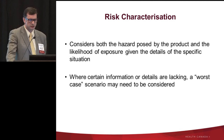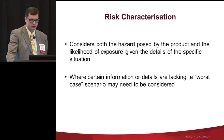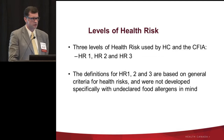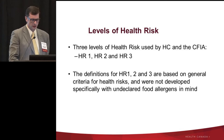The final risk characterization considers both the hazard posed by the product and the likelihood of exposure, combining those two things to develop the risk assessment. In Canada we have three levels: Health Risk 1 is the highest, Health Risk 2 is medium, and Health Risk 3 is usually something not very significant, perhaps involving a labeling issue with the food.